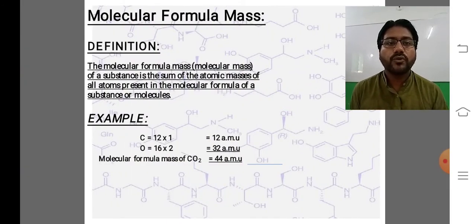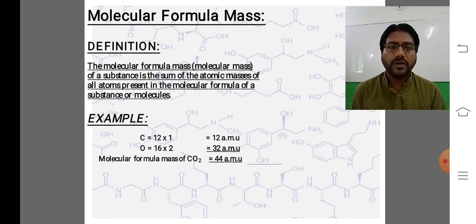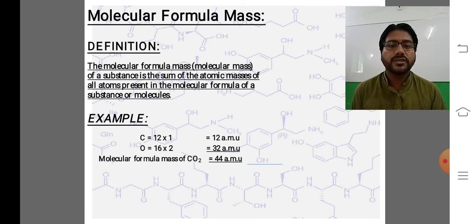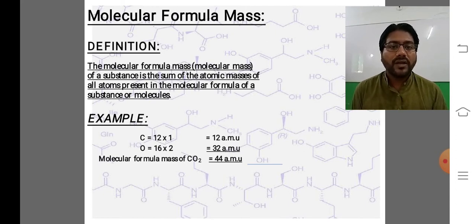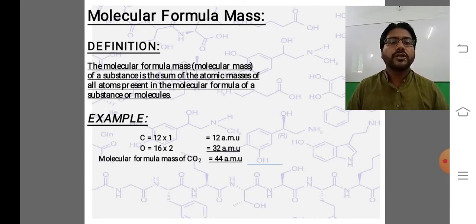Ab hamara agla topic hai molecular formula mass. Molecular formula mass ki definition: the molecular formula mass of a substance is the sum of atomic masses of all atoms present in the molecular formula. For example, carbon dioxide mein carbon 1 aur oxygen 2 ki tadaad mein hain. Carbon ka atomic weight 12 hai, to 12×1 = 12. Oxygen ka atomic weight 16 hai, to 16×2 = 32. Inko plus karein to 44 atomic mass units aata hai.